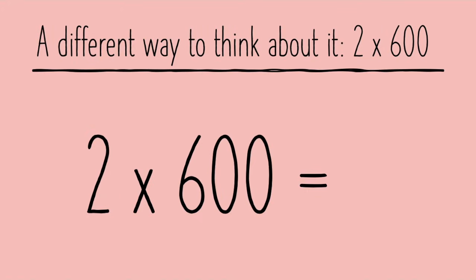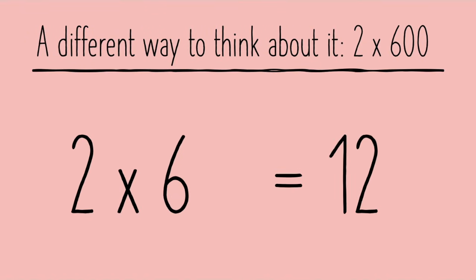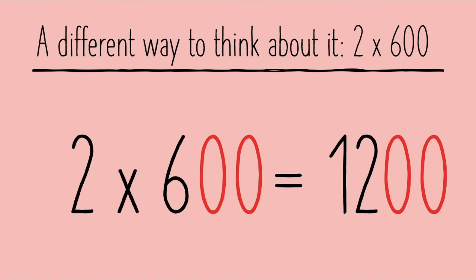Just like before, we can do the same thing with numbers in the hundreds. We get rid of our two zeros. Our equation then becomes 2 times 6, which we know is 12, and then we just have to add our two zeros back onto the end. Remember to always make sure that you're putting back the same number of zeros that you took away.